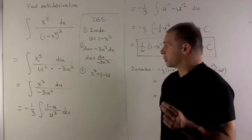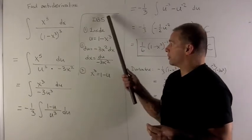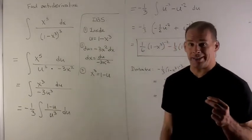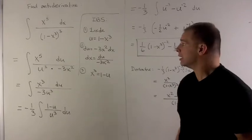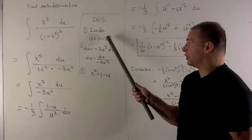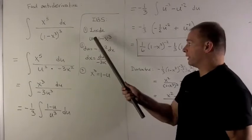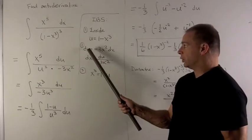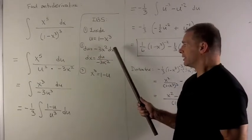To proceed with integration by substitution, we're going to target the inside of the composition, 1 minus x cubed. So I'm going to let that be equal to u. We're going to take the derivative of this and then it's going to be du equals that derivative times dx.